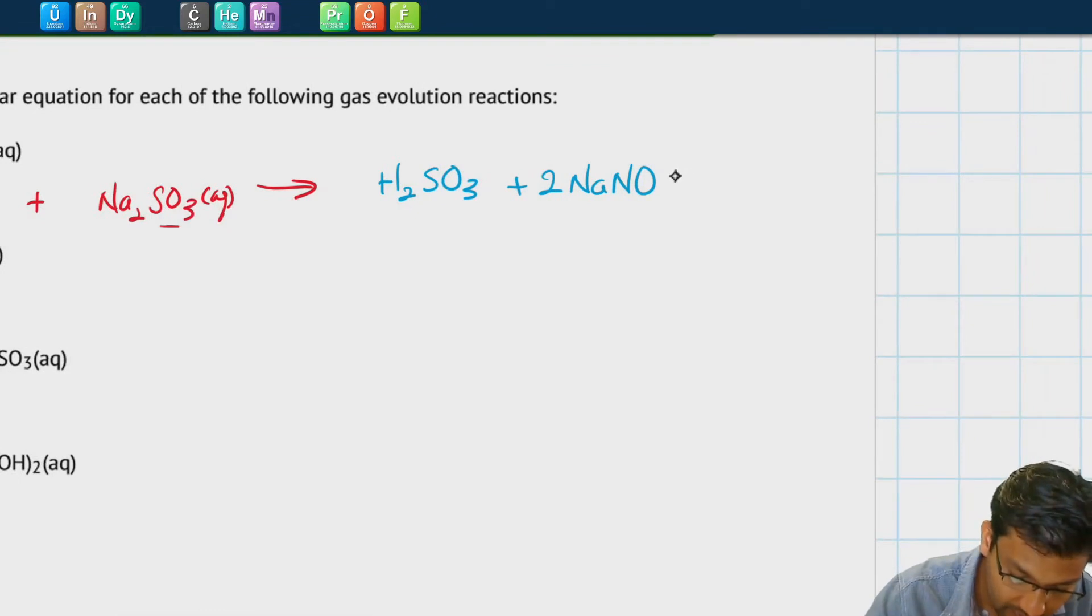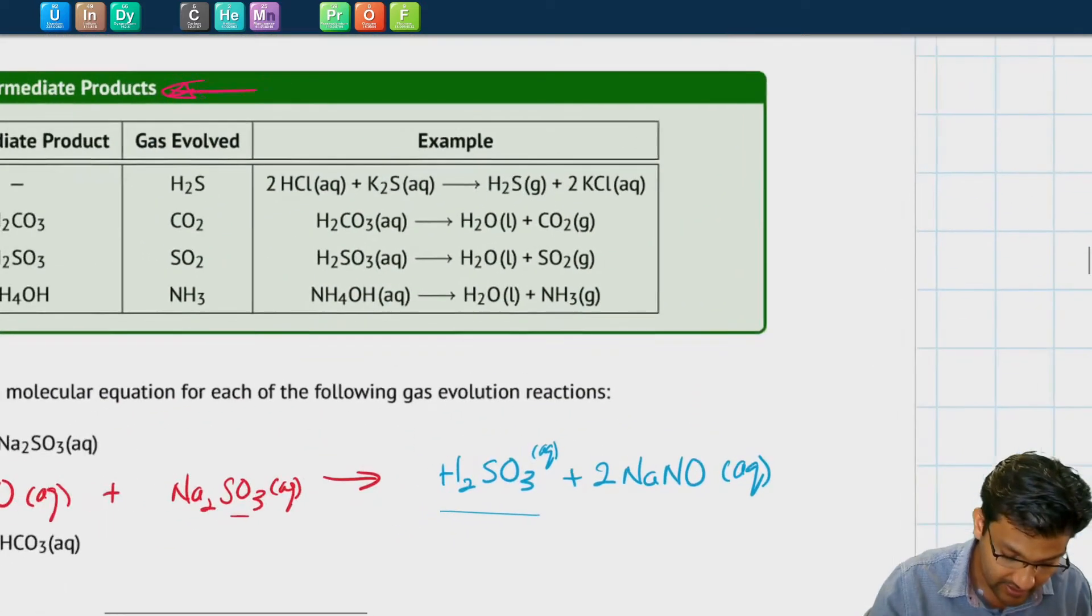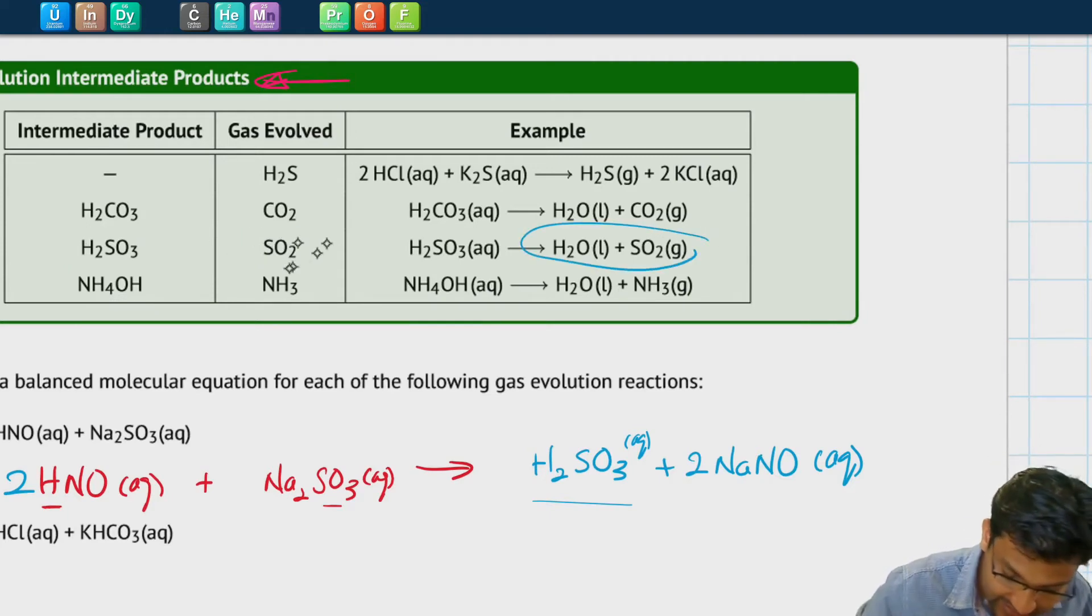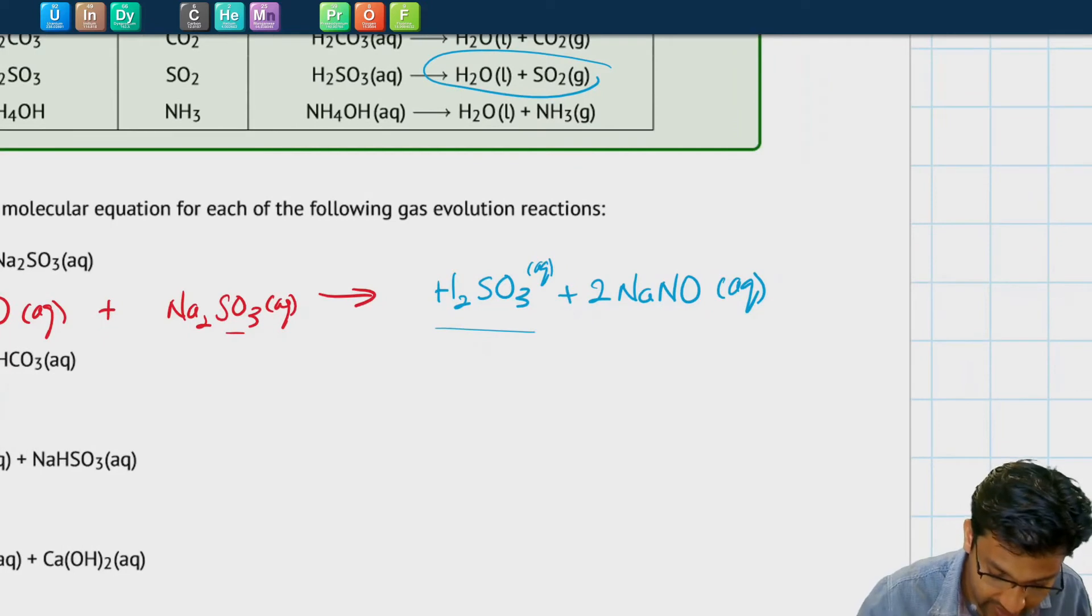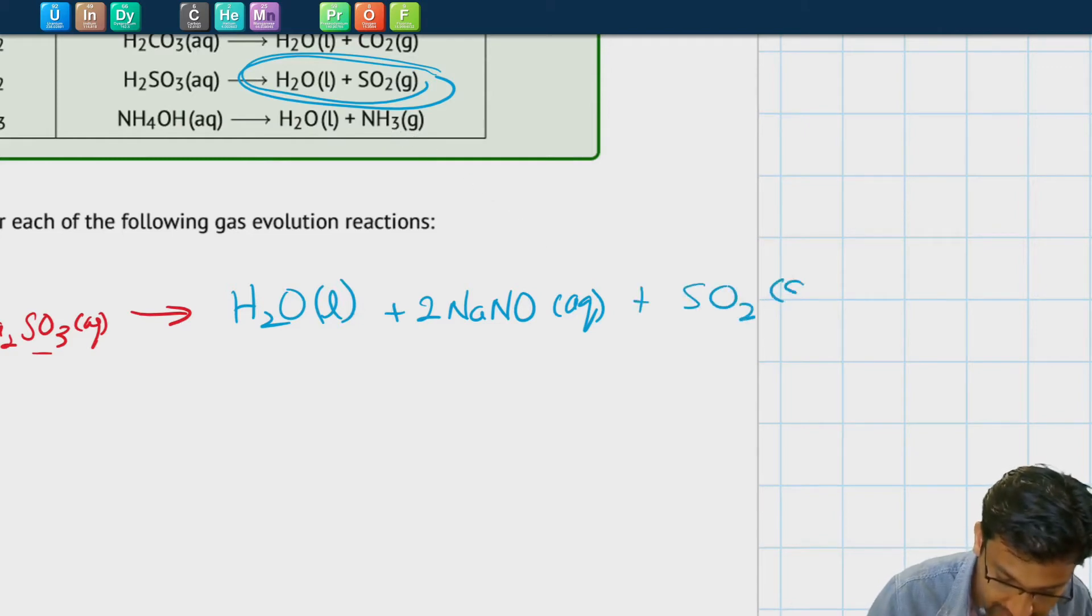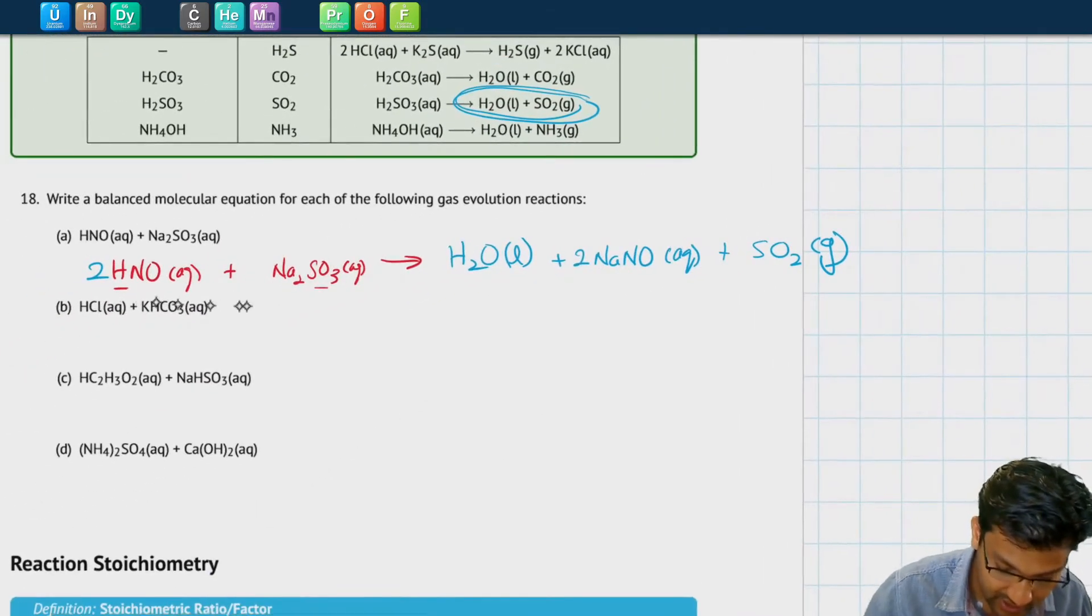If we look at our periodic solubility charts, we know that everything with sodium should be aqueous. But this H2SO3, while we might be tempted to put an aqueous over there, we recognize from this chart is one of those compounds, if you form it as a product, will break down to form sulfur dioxide gas and water. So instead of H2SO3, we will write these products here because that is what it breaks down to.